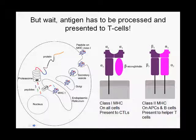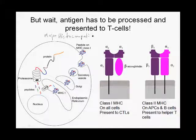That would be too easy if antigens could directly select B cells and T cells. Just to make it more complicated, especially T cells' T cell receptors cannot bind antigen on their own. Their T cell receptors can only bind antigen that has been processed and presented by MHC molecules. MHC stands for Major Histocompatibility Complex, and these are cell surface proteins.